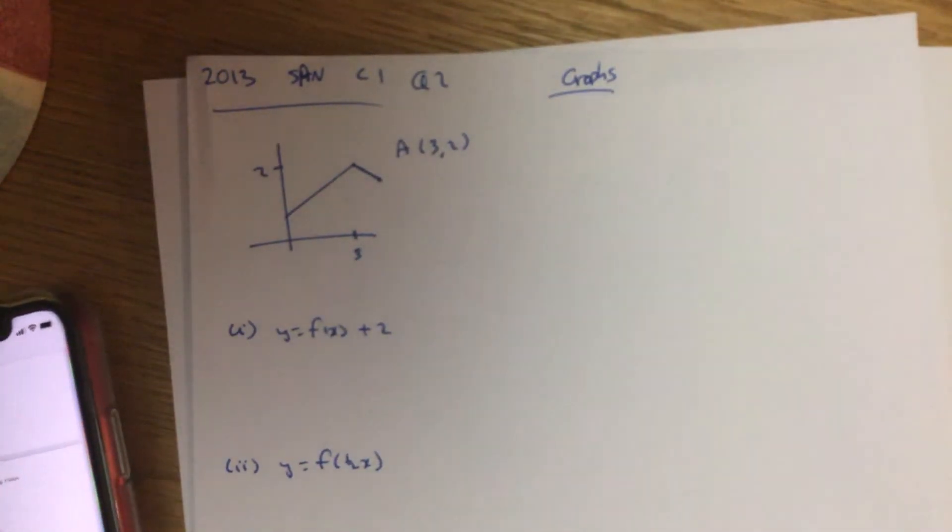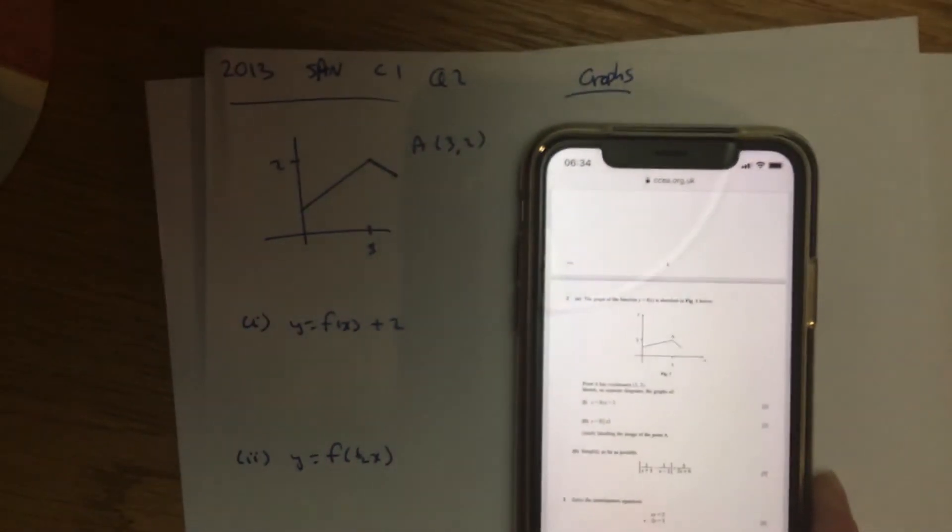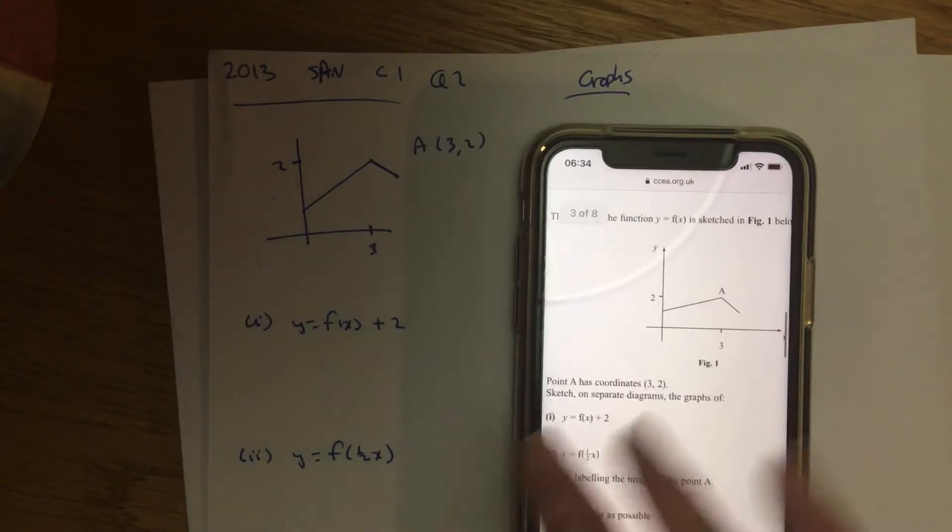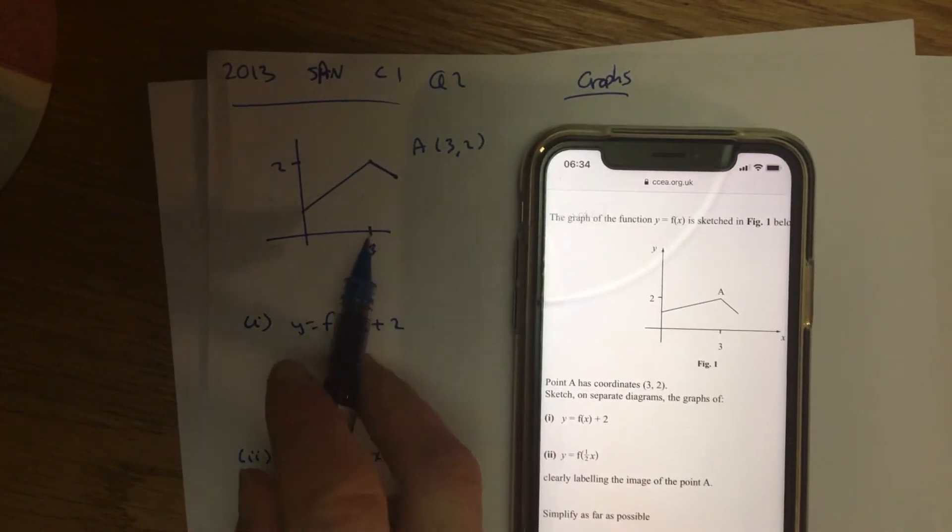Okay, 2013 January C1 question 2. So the graph is given for you. Drawing it out, the significant point is (3, 2).